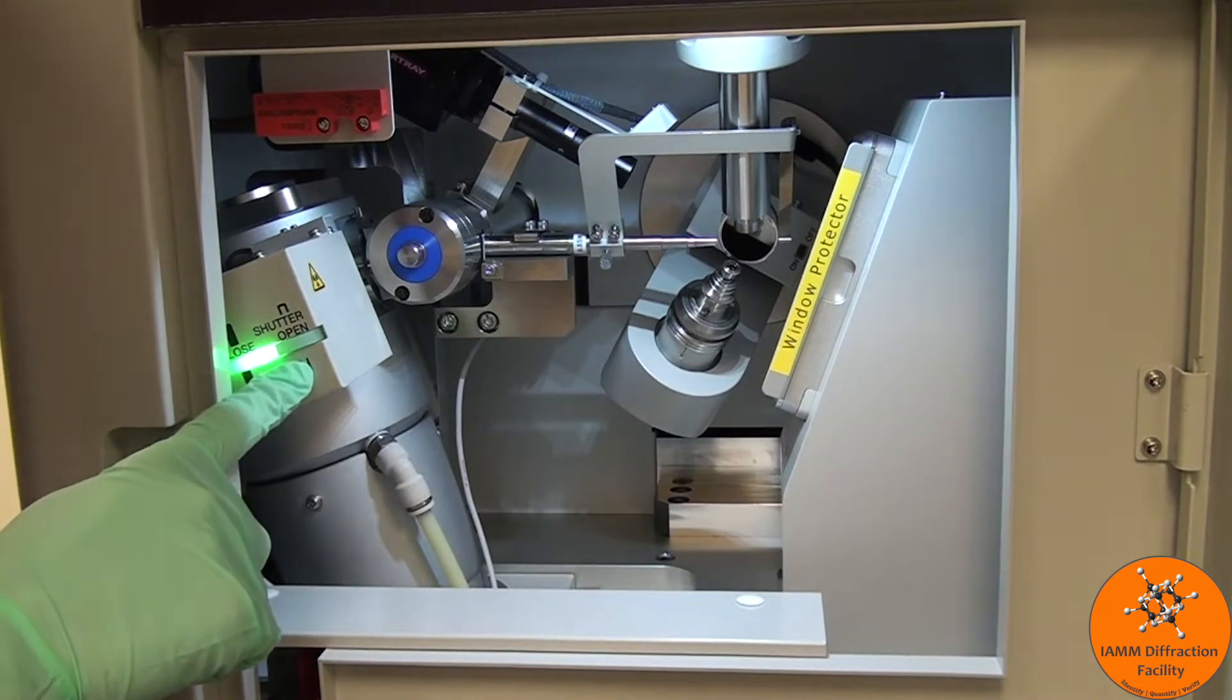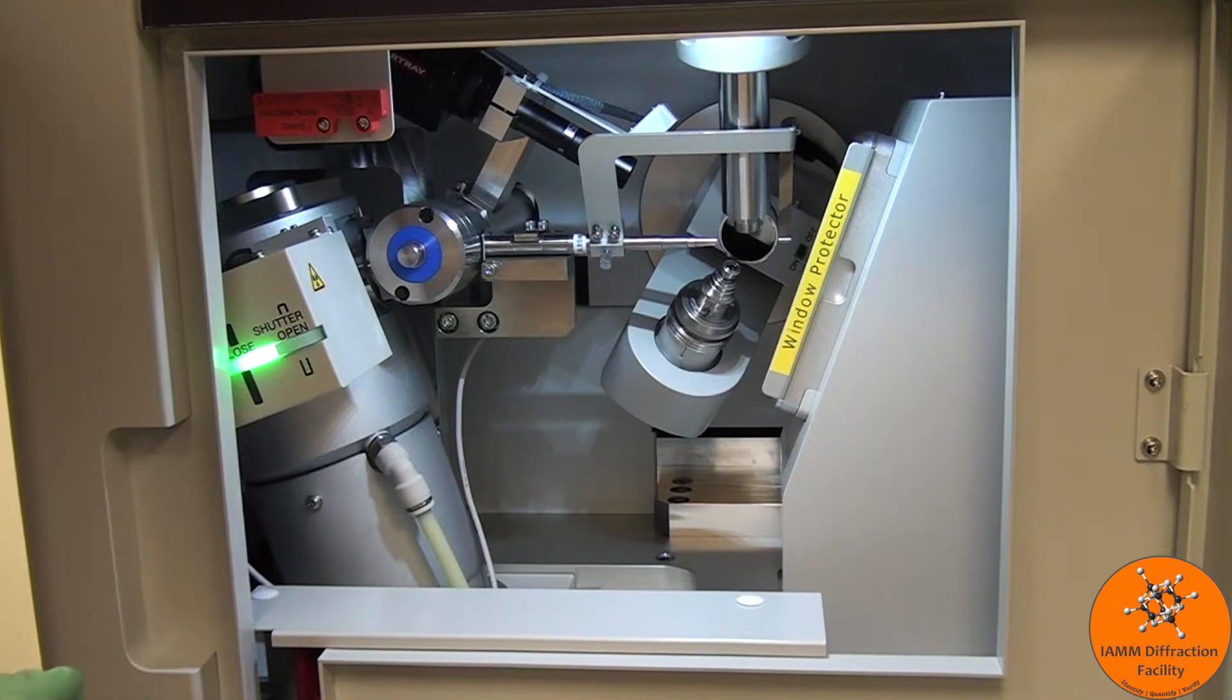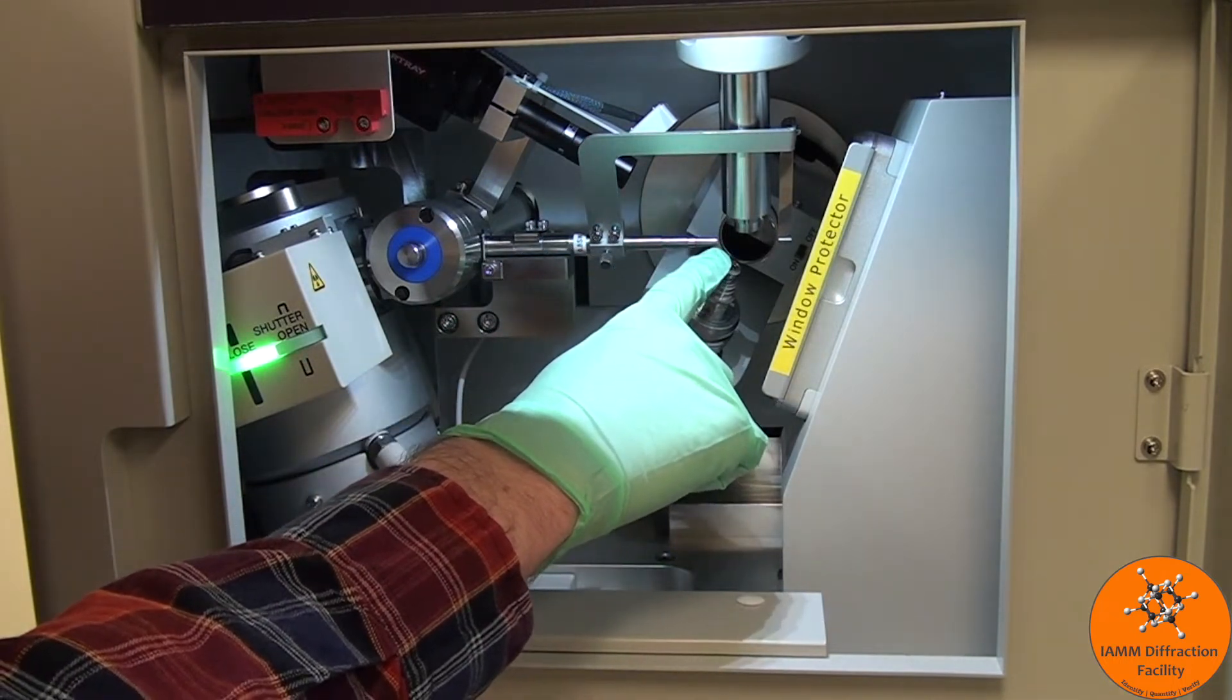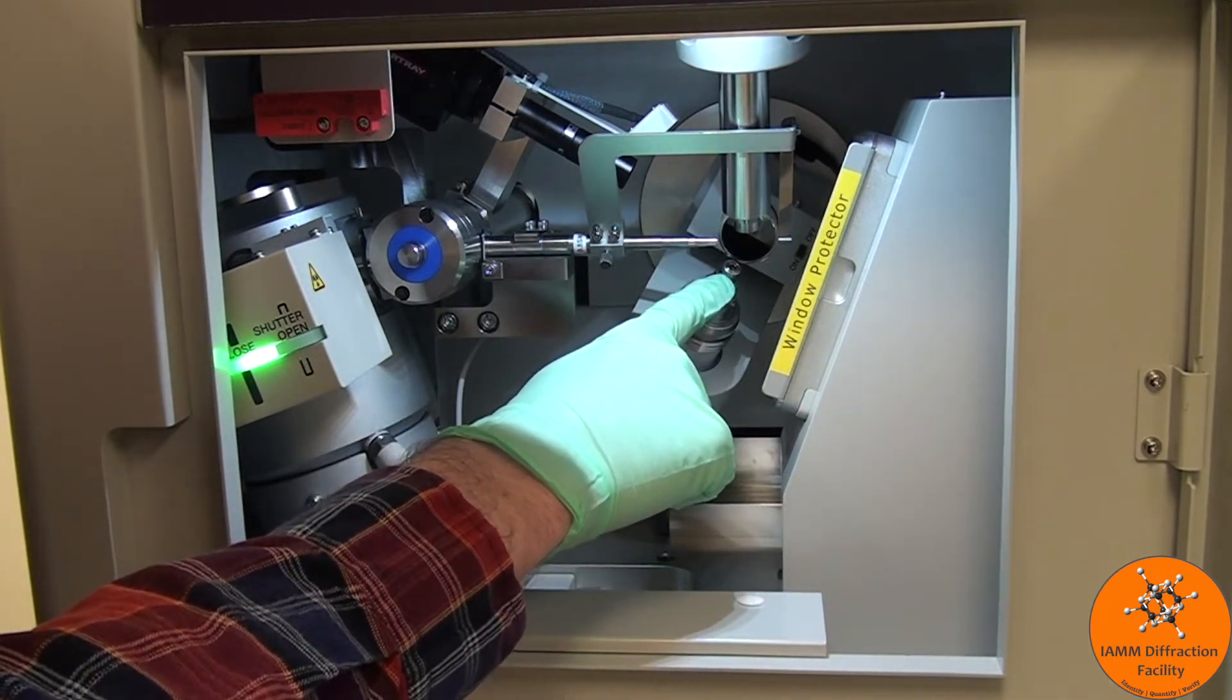We should never be able to see that light though, because in order for that to be turned on, the door would have to be closed and locked. This is the collimator, and this is where the x-rays come out. This is where your sample will sit.